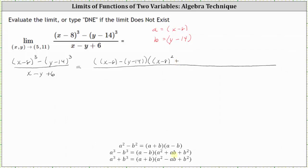Plus a times b, which is plus the quantity (x - 8) times the quantity (y - 14), and then plus b squared, which in our case is the square of (y - 14). The denominator stays the same.